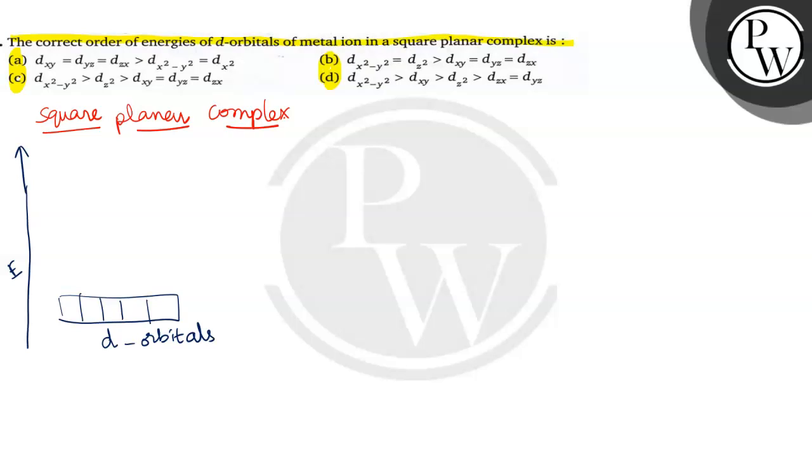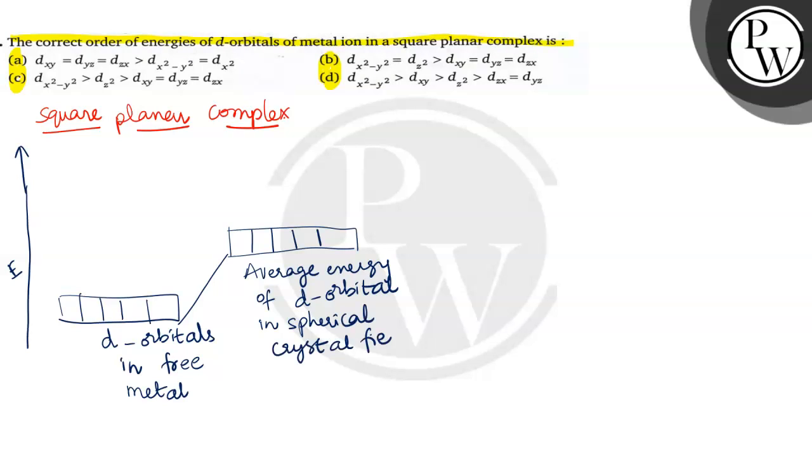This d-orbitals in free metal ion, and when this ligand is approaching, this average energy of d-orbital in spherical crystal, when ligands are approaching, then there is a splitting in the d-orbitals takes place like this. They split like this, t2g and eg set of orbitals.